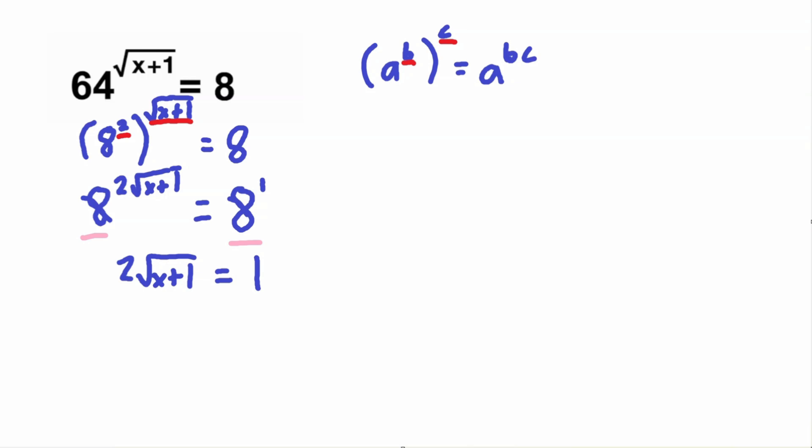And now we can use algebra to solve for this problem. We want to get x by itself, so let's divide by 2 first. And now we have that square root of x plus 1 is equal to 1 half.